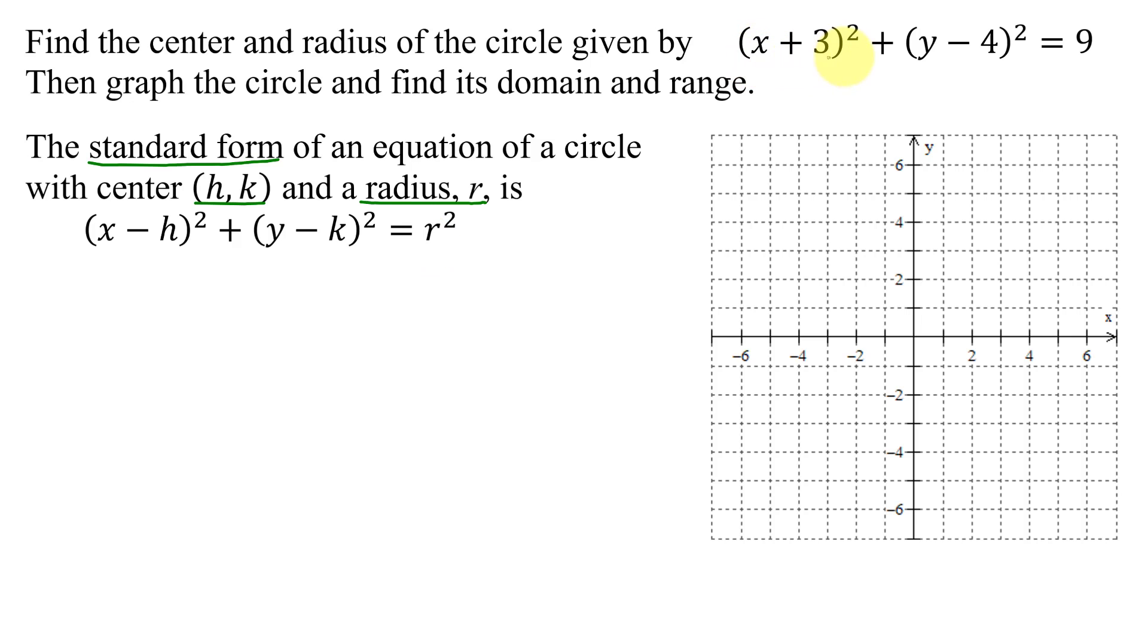Well, the equation we're given for our circle is in standard form. And notice when the equation is in standard form, the x-coordinate of the center is the opposite of the number that's with the x that's all squared. The y-coordinate of the center is the opposite of the value that's with the y that's all squared.